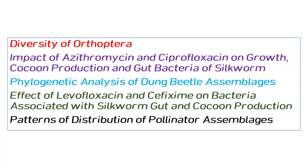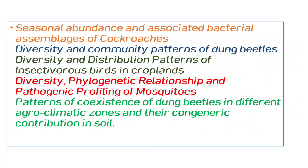Gut bacteria and different antibiotics can be checked. Phylogenetic analysis and DNA barcoding can be performed. Pollinator assemblages and distribution can be checked, along with seasonal abundance. Some insect community patterns can also be studied — like beetles, phylogenetic relationships, pathogenic profiling, and dung beetles living in different agroclimatic zones.